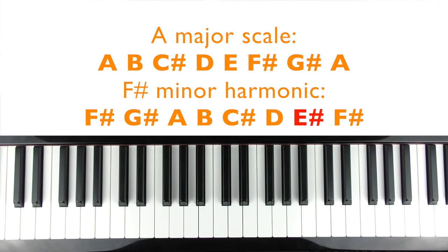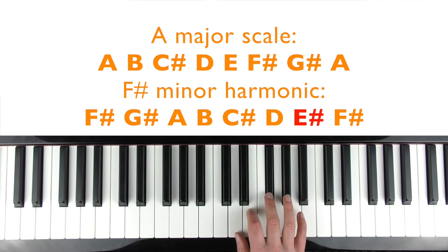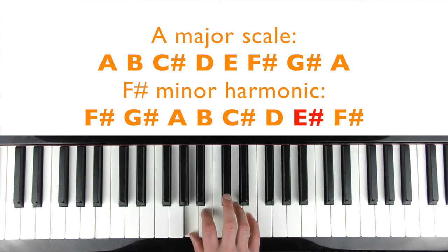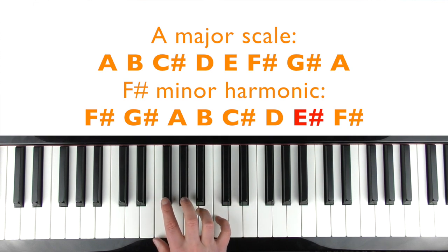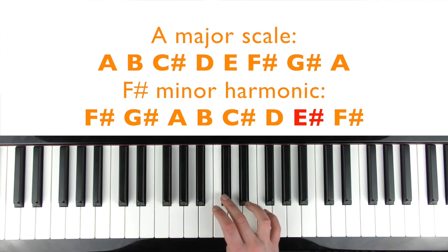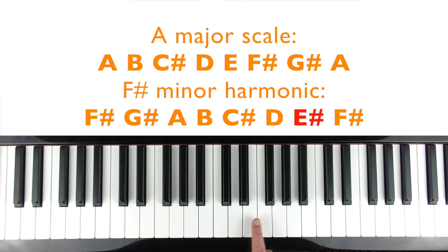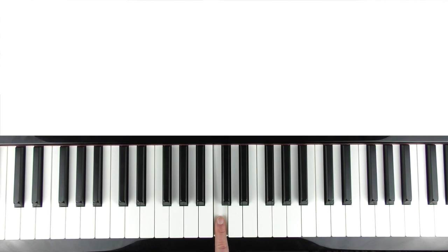So this one's in the key of A major so on the screen now are all the notes of the scale of A major. So the chords are mostly formed using these notes. It does go into the relative minor harmonic which is F sharp minor harmonic. So it also uses what you call an E sharp in there as well. So here is middle C for reference just to know where I've positioned my piano and to locate that pitch on your keyboard or piano.